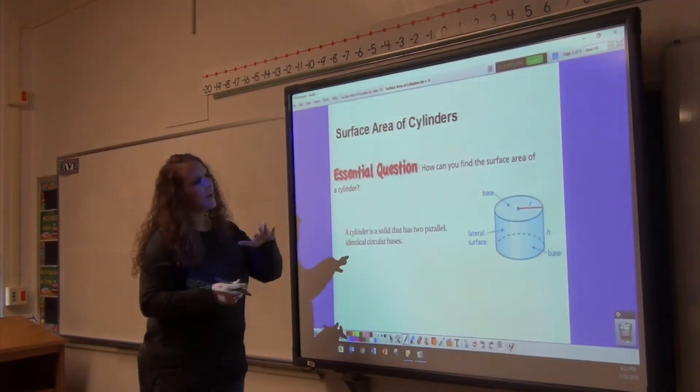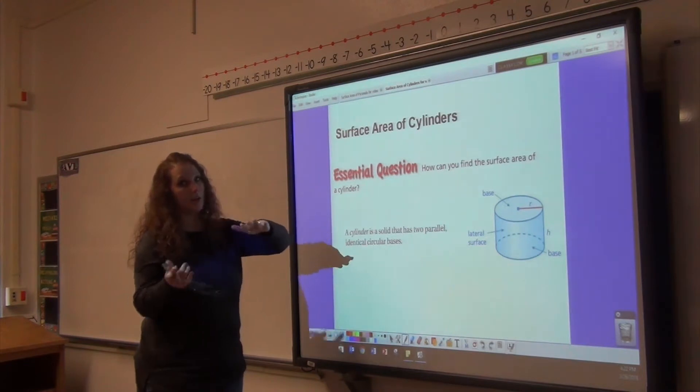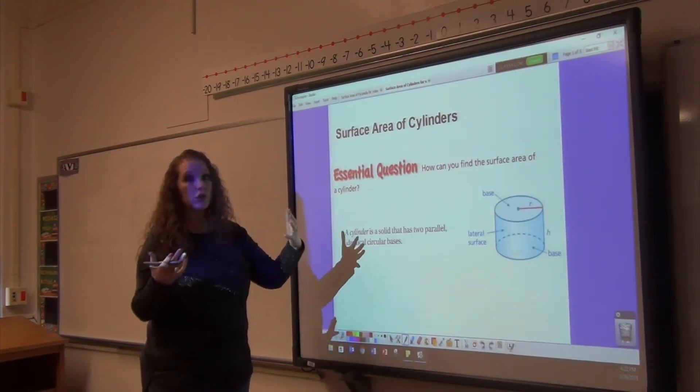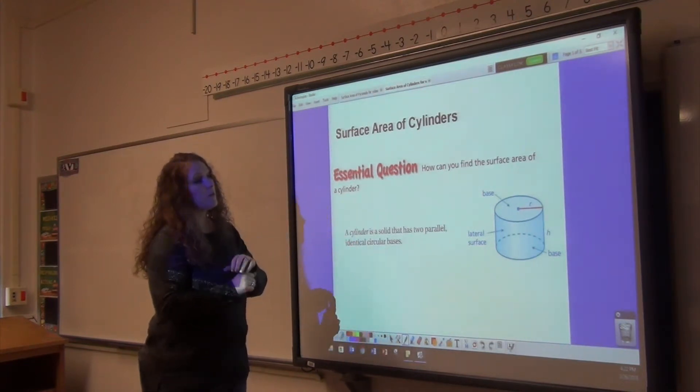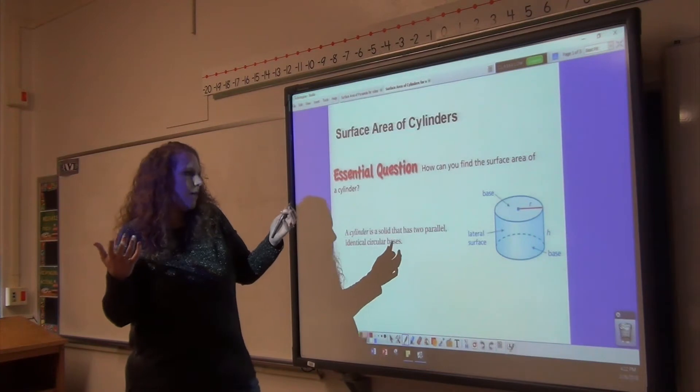All right, so we're going to have to find the area of the top and the area of the bottom using the formula for circles, and then we're going to have to find that round area around the can. How are we going to do that?